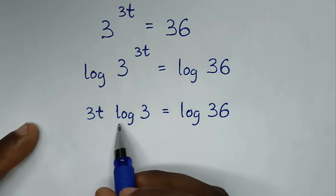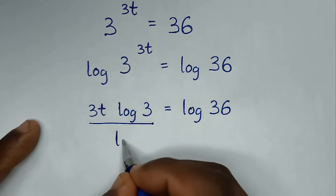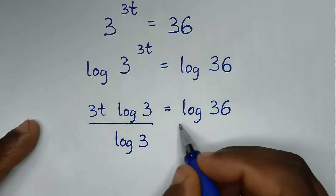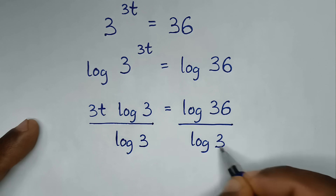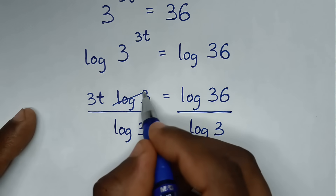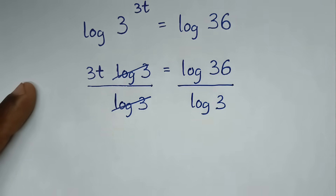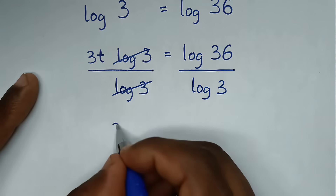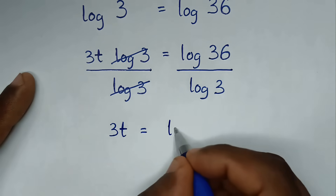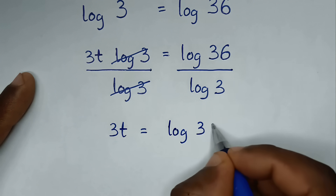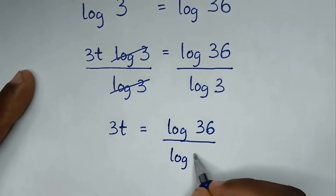Then we will divide by log of 3 on both sides — so log of 3 over log of 3 cancels — and it will be 3t is equal to log of 36 over log of 3.